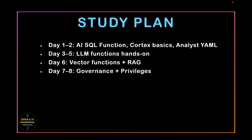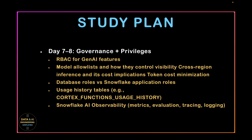Spend two solid days on governance because this domain is heavily scenario-based and it can be hard to visualize how model visibility and RBAC work. Focus on RBAC for Gen AI features, the model allow list, and how they control visibility. You may get scenario questions like: two groups need access to a common model but one group should not access another model — how do you implement that? Also cover cross-region inferences and their cost implications, token cost minimization, database roles versus Snowflake application roles, usage history tables, Cortex function usage history, and Snowflake AI observability covering metrics, evaluation, tracing, and logging. Observability is mostly theoretical — reading is enough — but governance questions can be tricky.